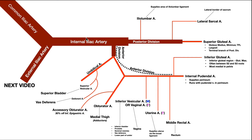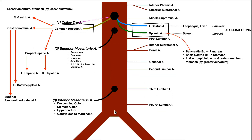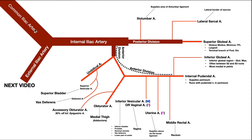Before we get into that, let's review where the internal iliac artery comes from. Up here we have the abdominal aorta, and at its inferior portion it bifurcates into two common iliac arteries. Viewing this from the front in an anterior view, this would be the patient's right common iliac artery and this would be the left common iliac artery. The common iliac artery then itself bifurcates into an external iliac artery and an internal iliac artery.